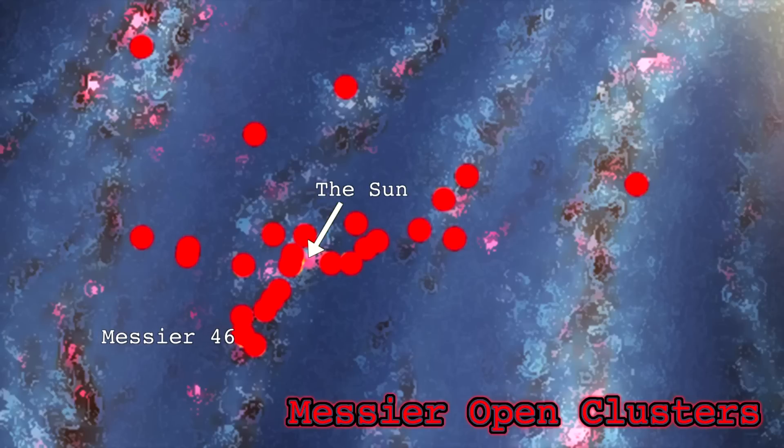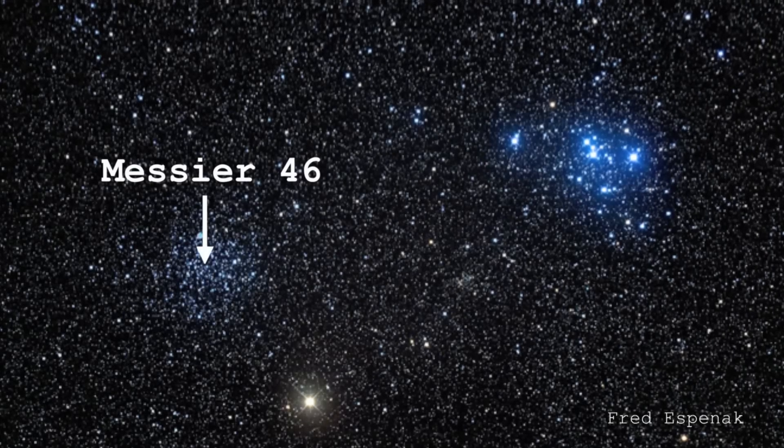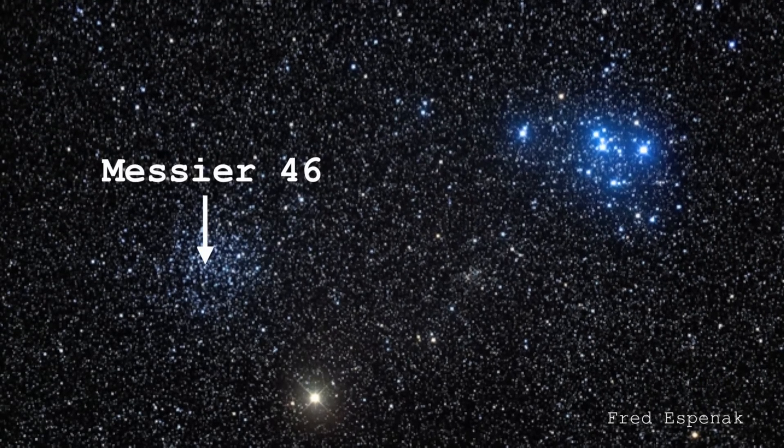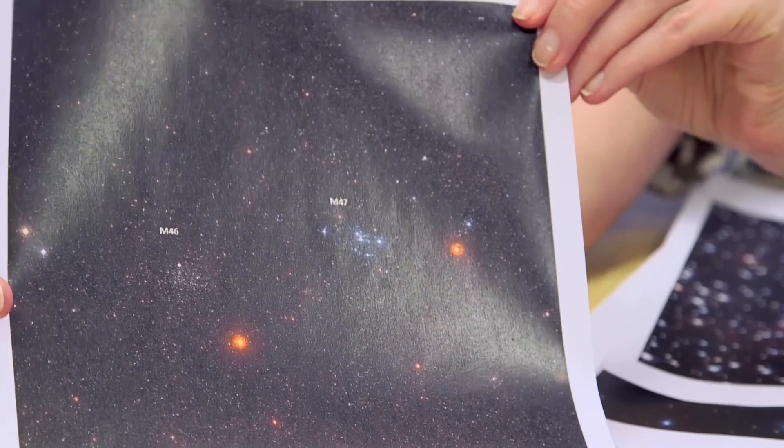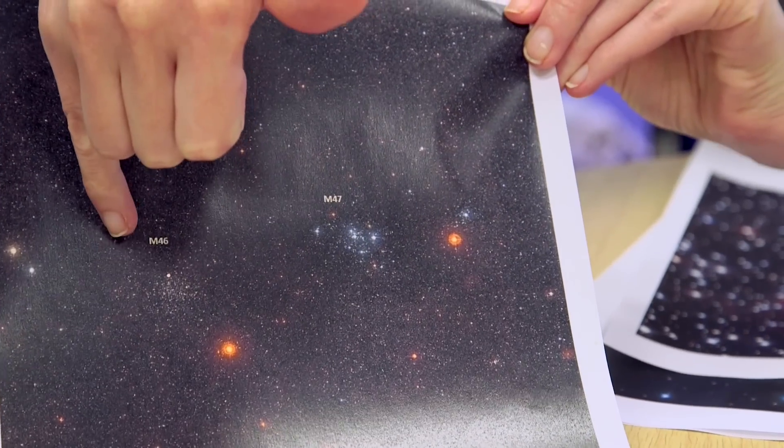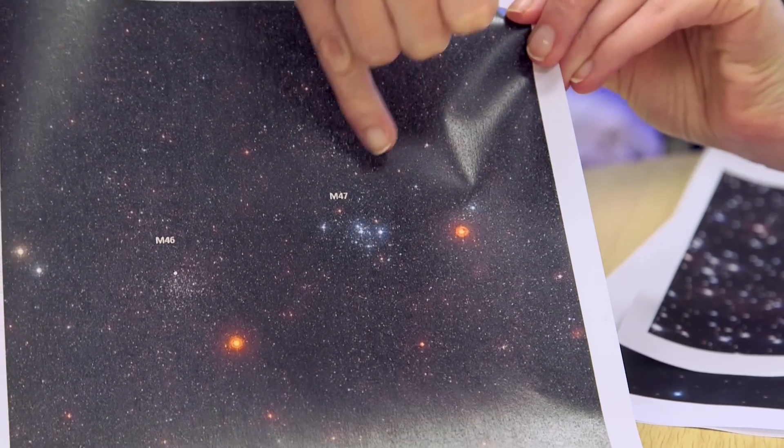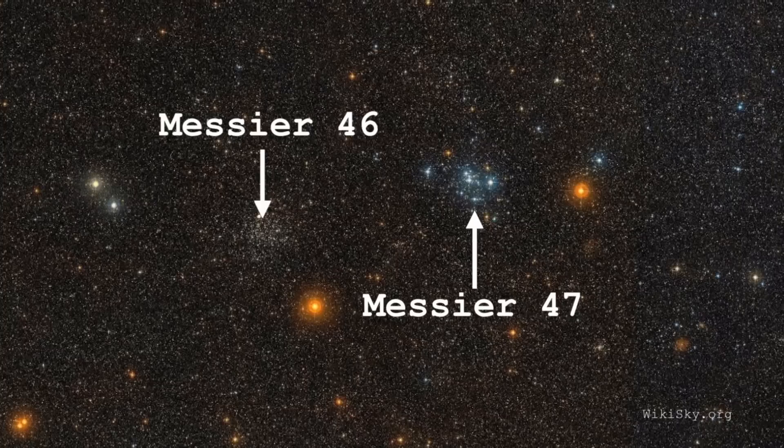It's a pretty substantial open cluster. It's got about 500 stars and covers an area about the size of the full moon. Here's a picture of it, and you actually get two Messier objects for the price of one, because this is Messier 46 over here which we're talking about, and here's Messier 47 which we'll save for another day, but is also an open cluster.